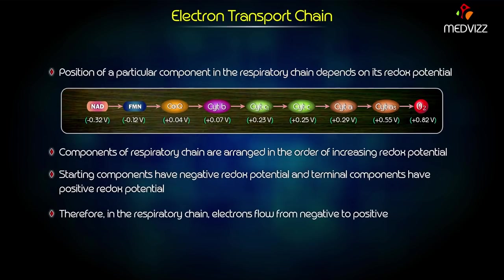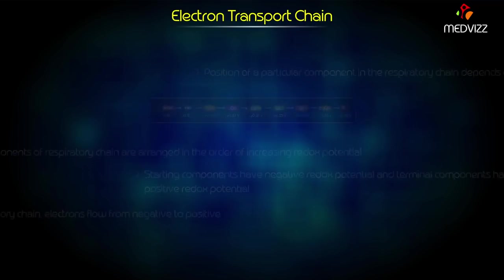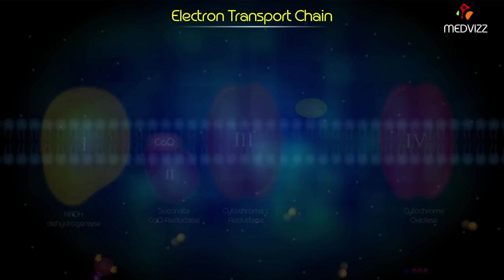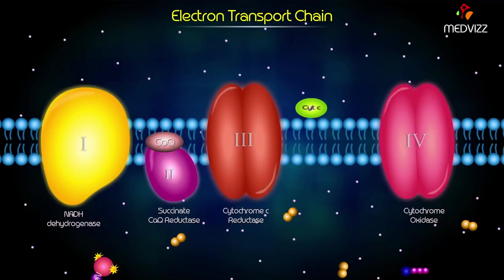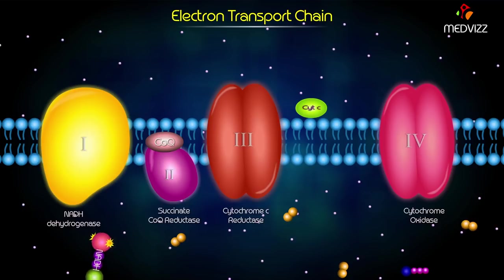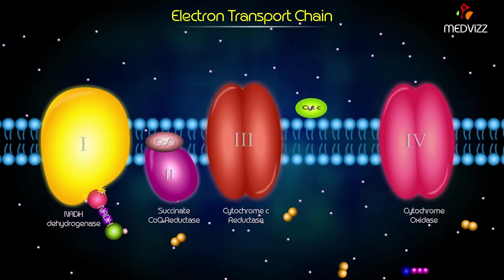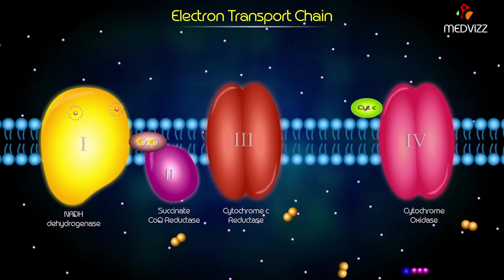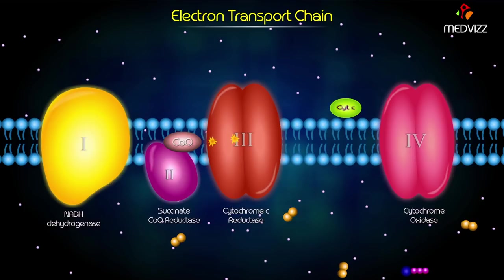Therefore, in the respiratory chain, electrons flow from negative to positive. Electrons flow from NAD to cytochromes via coenzyme Q, and then from cytochromes to molecular oxygen.